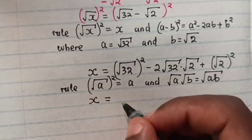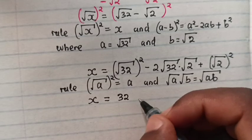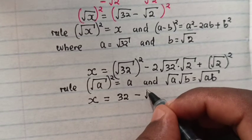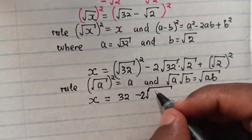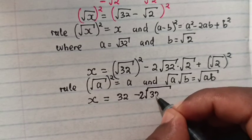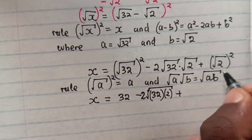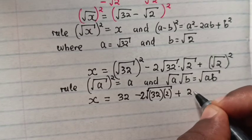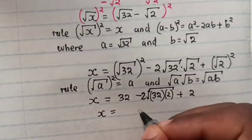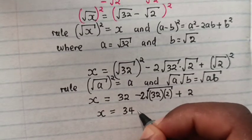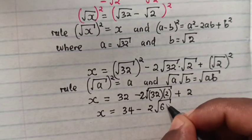So from here x will be equal to 32 minus 2 square root of 32 times 2 plus 2. Then x is equal to 32 plus 2 is 34 minus 2 square root of 64.